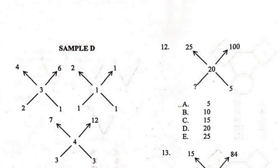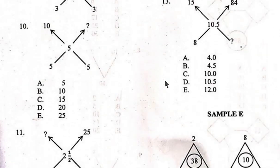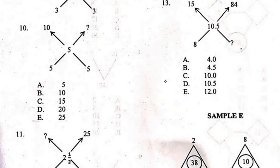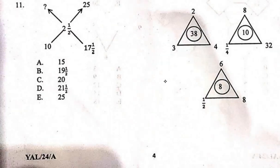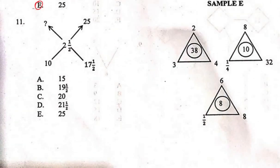For Sample D, the pattern: 3 + 1 = 4 (addition), and 2 × 3 = 6 (multiplication). Checking: 1 + 1 = 2, and 1 × 1 = 1 — yes, the pattern involves both addition and multiplication. For Question 10, I multiply: 5 × 5 = 25, so the missing value is 25. The right answer is B.